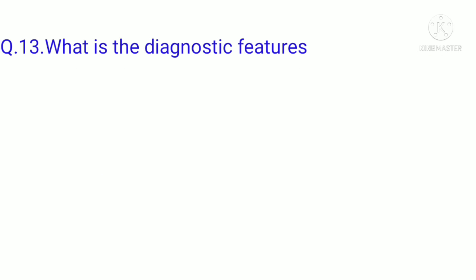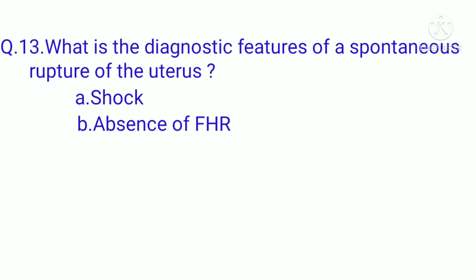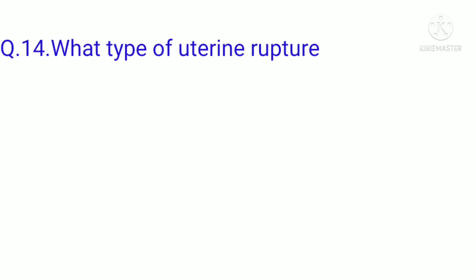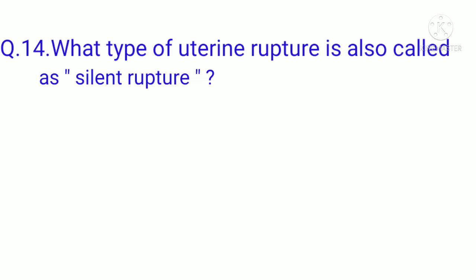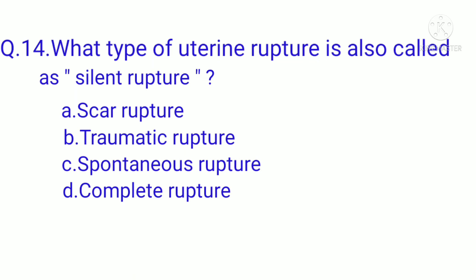Question 13: What are the signs of complete rupture of the uterus? Option A: shock, Option B: absence of fetal heart rate, Option C: both A and B, Option D: none of the above. The correct option is C, both A and B. Question 14: What type of uterine rupture is also called silent rupture? Option A: scar rupture, Option B: traumatic rupture, Option C: spontaneous rupture, Option D: complete rupture. The correct option is A, scar rupture.